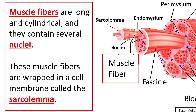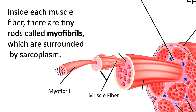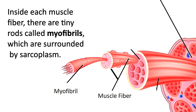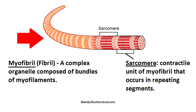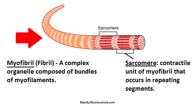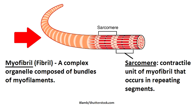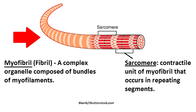Now let's take a look at some of the individual muscle cells, which are called muscle fibers. These fibers are long and cylindrical and they contain several nuclei located around the peripheral portion of the cell. These muscle fibers are wrapped in a cell membrane called the sarcolemma. Inside each muscle fiber there are tiny rods called myofibrils, which are surrounded by sarcoplasm. These myofibrils consist of repeating segments called sarcomeres, which are the tiny units responsible for skeletal muscle contraction.